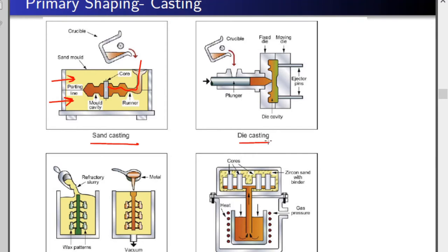Next is die casting. Here we use dies — molds usually made of metal, very strong. There is a plunger and cylinder arrangement. Liquid is poured in and the plunger pushes it into a cavity created by the dies. A fixed die and a moving die are joined together to form a cavity. The cavity is filled by liquid metal, and upon solidification, it creates a cast product.